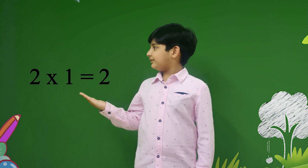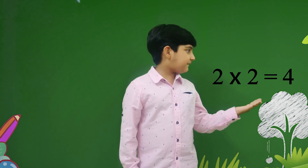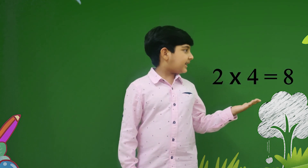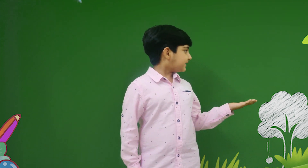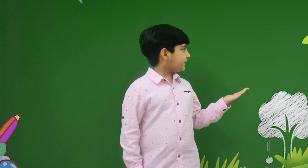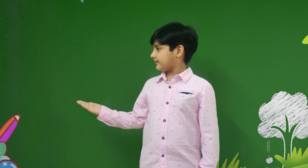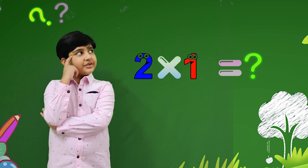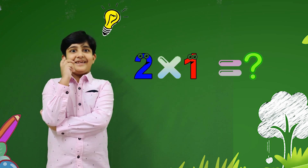Let's sing again. Two ones are 2, two twos are 4, two threes are 6, two fours are 8, two fives are 10, two sixes are 12, two sevens are 14, two eights are 16, two nines are 18.